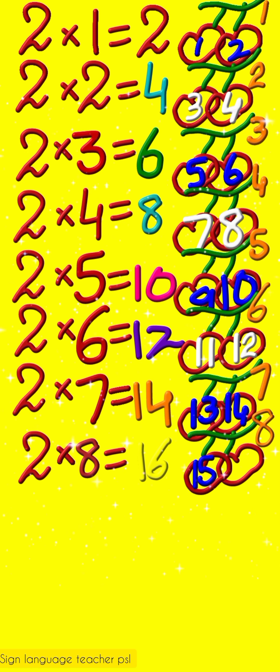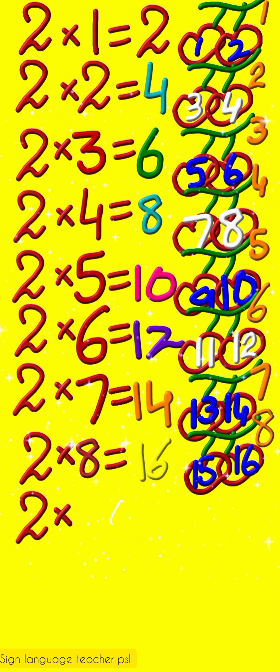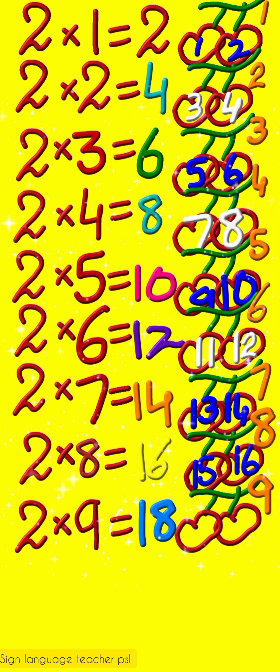Add two more cherries to the eighth twig. Two nines are eighteen. Repeat after me. And count. Add two more cherries on the ninth twig. Seventeen, eighteen.